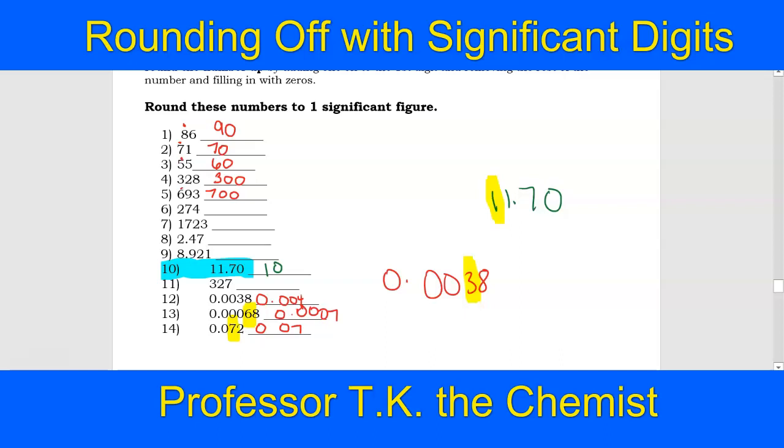If you put a decimal at the very end like this, then that gives you two significant digits. You've got to leave the decimal off in order to still keep in mind the rules in terms of having one significant digit.